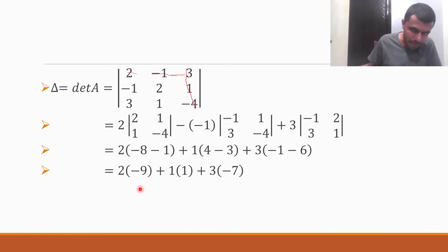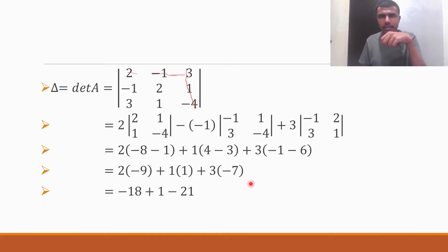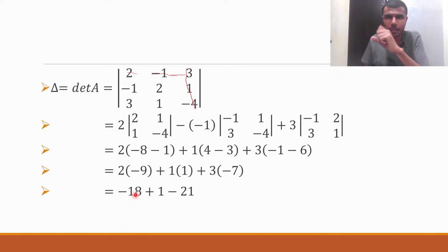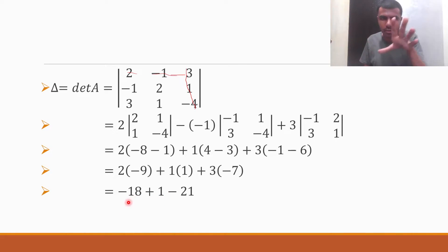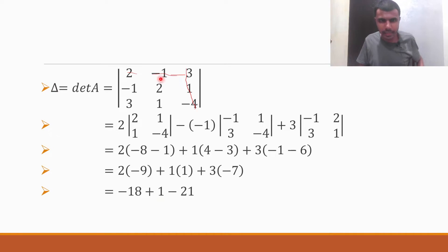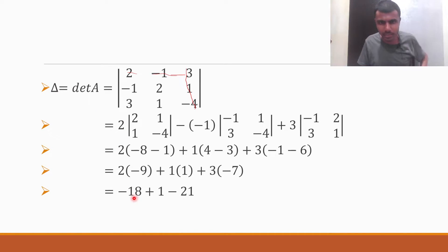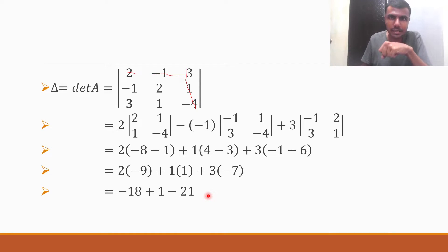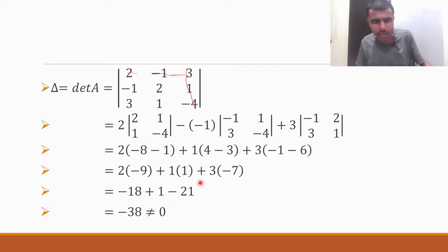2 into minus 9 is minus 18 plus 1, and 3 into minus 7 is minus 21. Minus 18 plus 1 is minus 17, because 18 is bigger and has the minus sign, so the final answer is negative: 18 minus 1 is 17, so minus 17. Minus 17 minus 21 is minus 38. And it's not equal to 0.